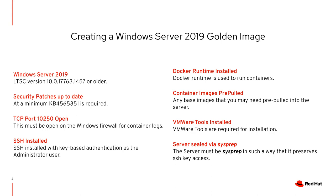Container images should be pre-pulled onto the node. Windows container images can be quite large and could cause timeouts when deploying applications, so it's recommended that you pre-pull any images onto the node before you run sysprep. You need to install VMware Tools as well. And lastly, before you shut down the VM, you need to run sysprep. The server must be sysprepped in a way that preserves all changes, including SSH authentication, SSH starting on boot, and all security patches.